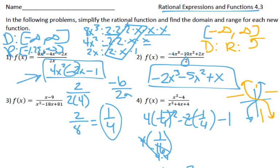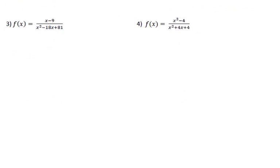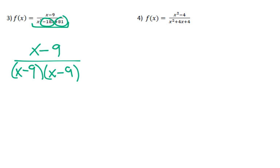3 and 4, we've got to do a little bit more work to simplify these ones. I'm going to need to factor this first, so I get x minus 9 over, and we're going to factor that. So factors that add up to negative 18, multiply to positive 81. It's got to be x minus 9 and x minus 9. So one of those cancel out, that whole piece, so think of it as times 1, so we're left with 1 over x minus 9.